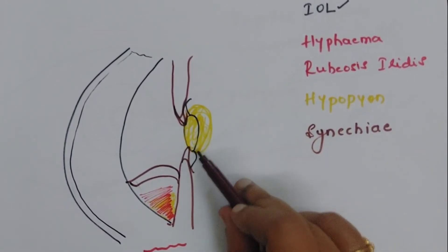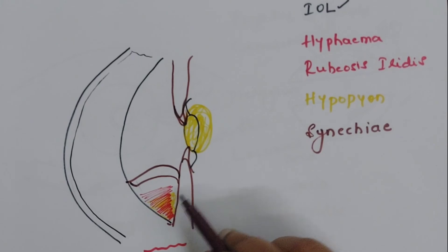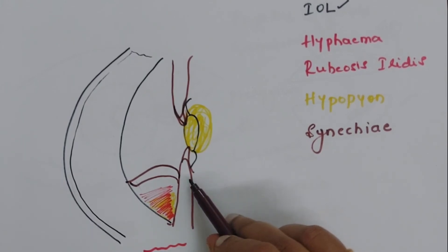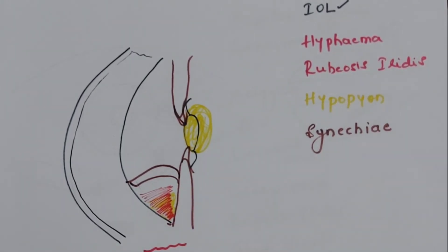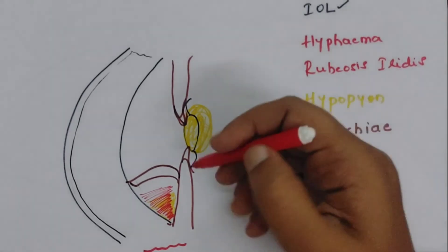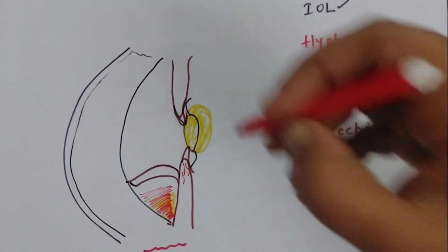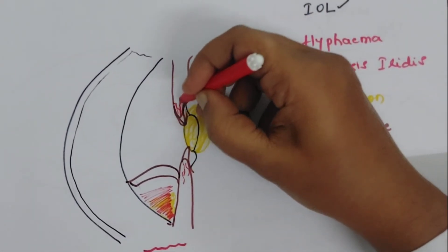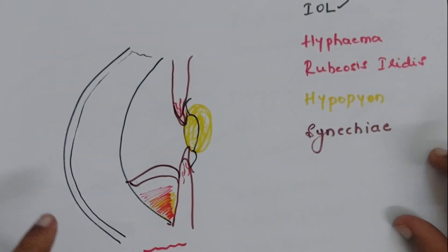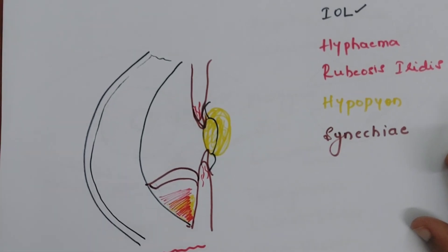In the slit examination you can represent the intraocular lens, hyphema, hypopion, anterior and posterior synechiae, and rubeosis iridis — vessels in the iris. This completes the color coding system for other anterior segment lesions. Combine both videos on corneal lesions and anterior segment lesions so that you will be able to draw the complete picture of the anterior segment with the color coding system.